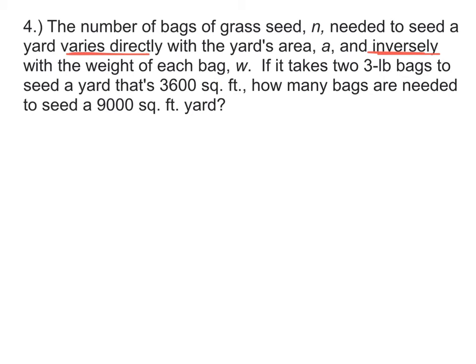First of all, they're going to vary directly and inversely. So this is the type of joint variation that I'm talking about. So let's grab all of the variables and start putting them together. We need the number of bags and the yard's area, A, and the weight of each bag. So first of all, it says that the number of bags of grass seed, N, is going to vary directly with the area. So that means direct variation is where we take a constant times A. Then it's also going to vary inversely with the weight of each bag, W. That means that our constant K has to get divided by W.